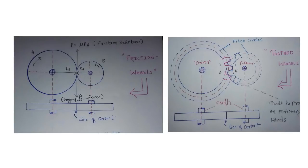Actually, it is a modified form of a friction wheel. To avoid slipping, teeth are provided on the periphery of the friction wheel. Such type of construction is called a gear.